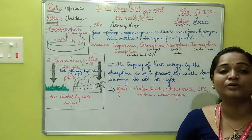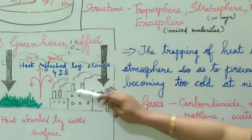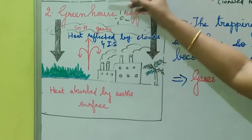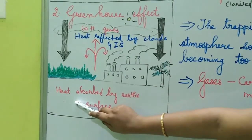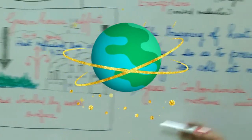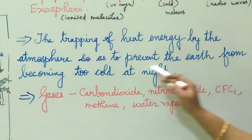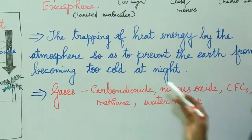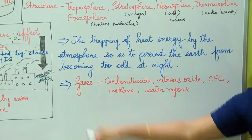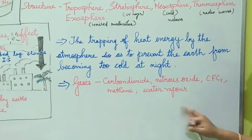Next we are going to discuss about the greenhouse effect. You can see the factories here and the smoke leaving from them — the sun's radiation is absorbed by the land. The trapping of heat energy by the atmosphere to prevent the earth from becoming too cold at night is called the greenhouse effect. The greenhouse gases are carbon dioxide, nitrous oxide, CFCs, methane, and water vapor.